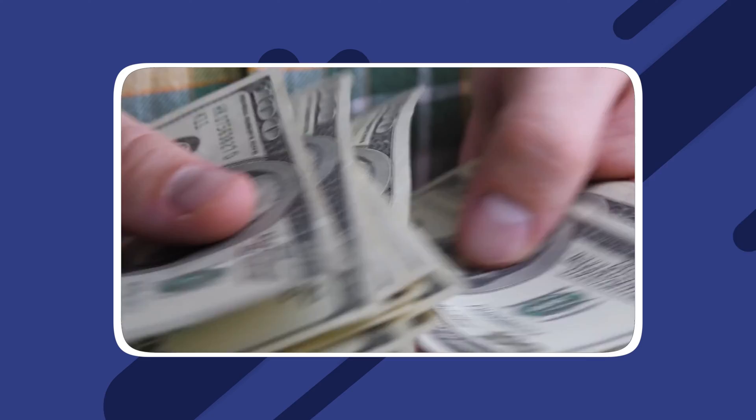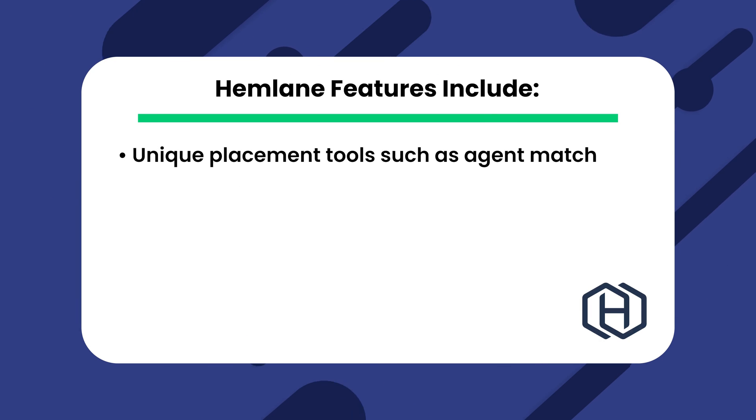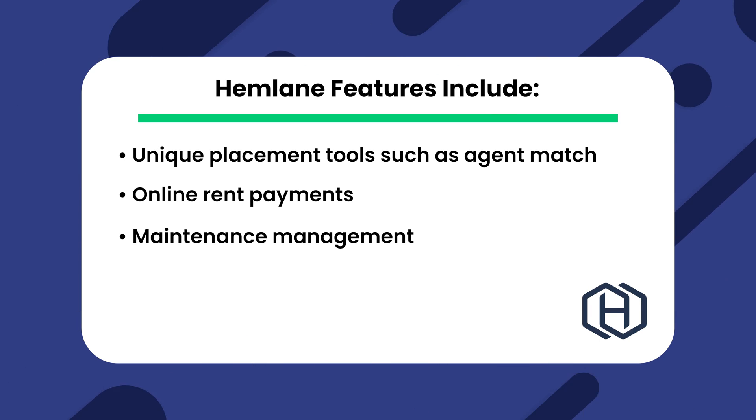Hemlane is the final option on our list, but it's a worthy contender. This software stands out for its somewhat unique features, including an agent match tool that matches you with local agents to help fill your vacant units more efficiently. These features may not be necessary for many property managers, in which case the high price may not justify the extra bells and whistles. However, for some, Hemlane's unique features might be precisely what they're looking for. Hemlane's features include unique placement tools such as agent match, online rent payments, maintenance management, and tenant screening.